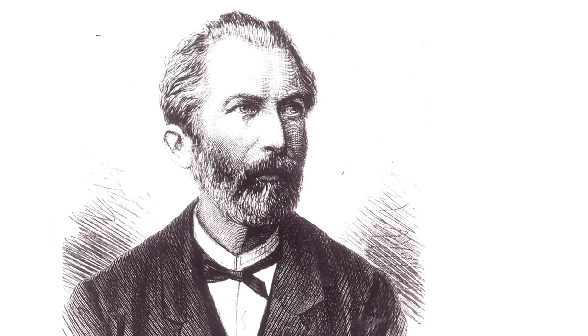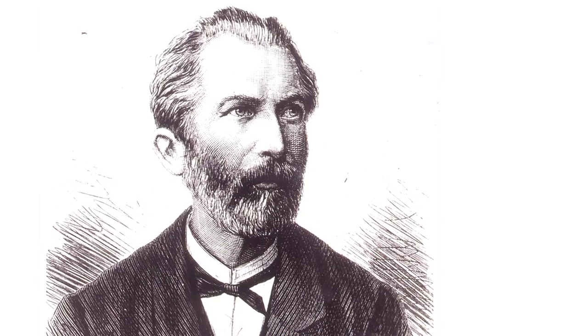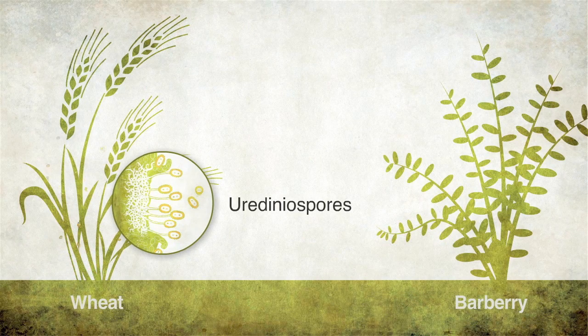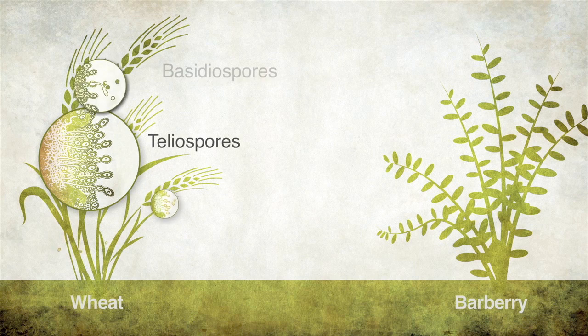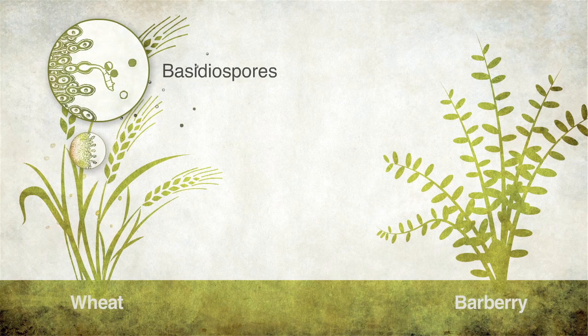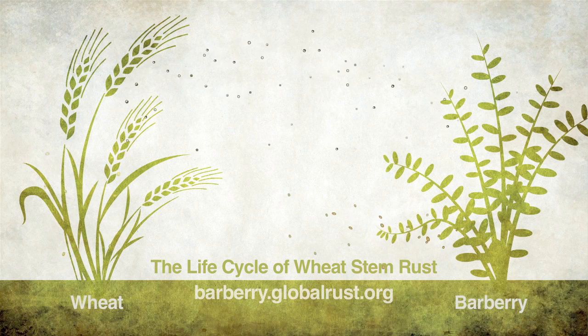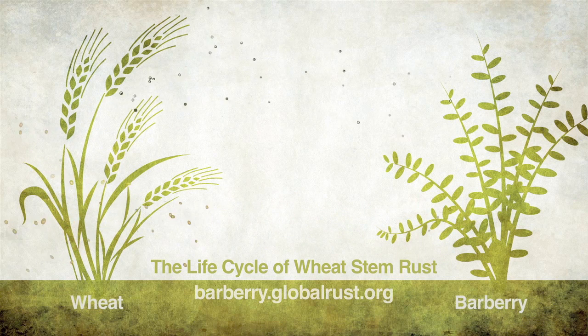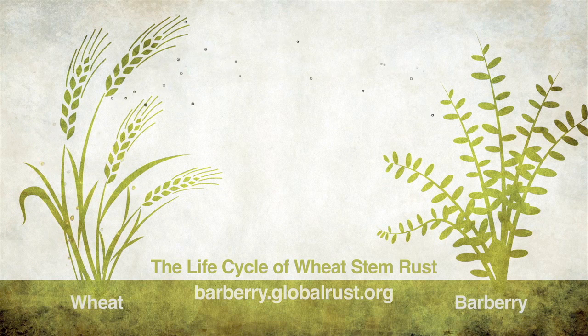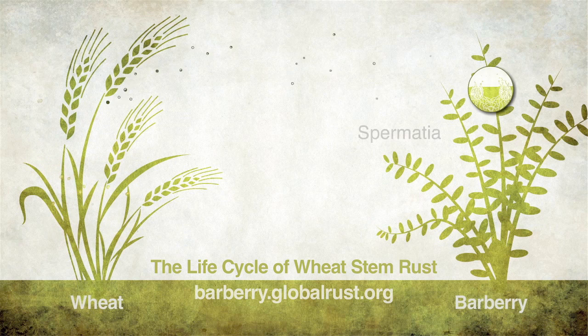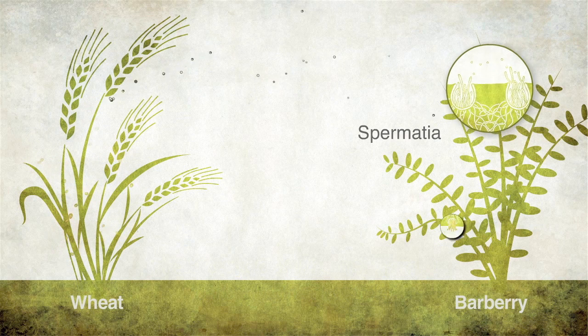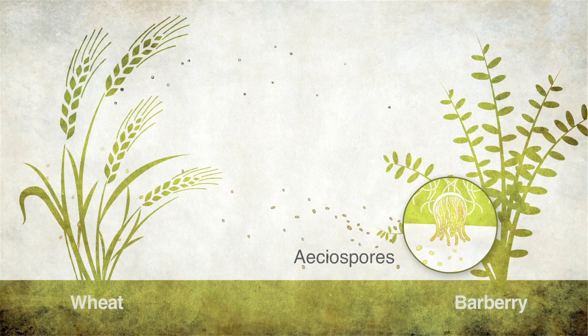Where does it come from? In a series of experiments in the mid-1860s, Heinrich Anton de Bary, one of the founding fathers of modern plant pathology, demonstrated that the stem rust pathogen, Puccinia graminis, completes only part of its life cycle on cereal hosts like wheat. As shown in detail in the short film The Life Cycle of Wheat Stem Rust, the pathogen completes other parts of its life cycle only on alternate hosts, which include certain species of plants from the genus Berberis, commonly called barberries.